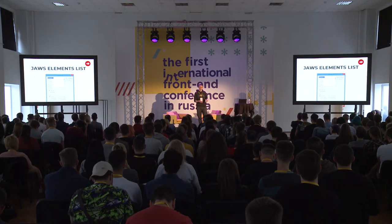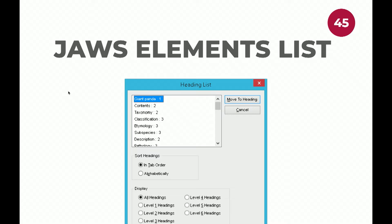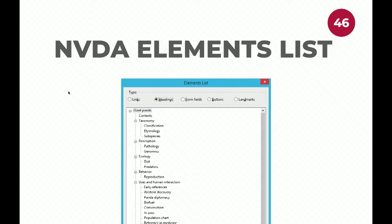In the JAWS screen reader the situation is slightly different — there is no one single tool, but there are two things you need to know. There is a Quick Key Manager where you can set or see all shortcuts for different element groups, and then you can use those shortcuts to open a navigation tool for separate element groups like headings, tables, or forms. With the NVDA screen reader everything is simple — it works almost the same as the element list in VoiceOver. The only difference is you cannot customize it, but all the options on screen are more than enough for accessibility testing.